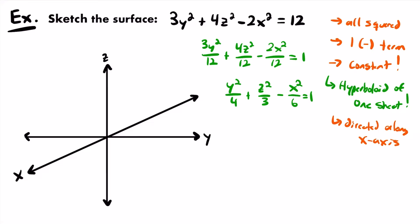We use this equation to sketch the hyperboloid in our 3D coordinate system by finding 3 traces of ellipses. First, set the negative variable (x, the odd one out) equal to 0 — that term disappears, giving y²/4 + z²/3 = 1. That's an ellipse with y-intercepts of ±2 (√4) and z-intercepts of ±√3 ≈ ±1.7. Then we find 2 more traces by setting x equal to a convenient value — one that when plugged in is divisible by 6.